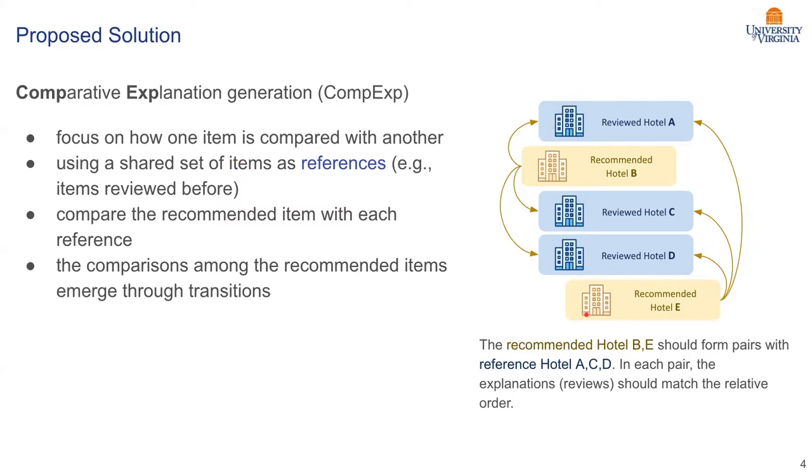Let's use the right-side hotel recommendation as an example. There are three reviews in Blue Box A, C, D which are reviewed by this user before. Whenever we want to recommend a new item, we can compare this item with these existing reviews. We pair, for example, this newly recommended Hotel B, we can compare it with all these existing item hotels to see how Hotel B is ranked in relation to the other reviewed items. And as soon as a comparison, the ranking or the comparison between these recommended items could emerge. For example, B is better than C, D and E is worse than C, D. Somehow, in the end, when we have the final explanation, when the user reads them, they can feel that B is better than E through this shared set of references.